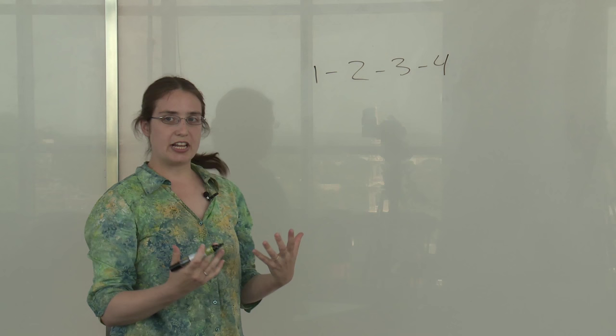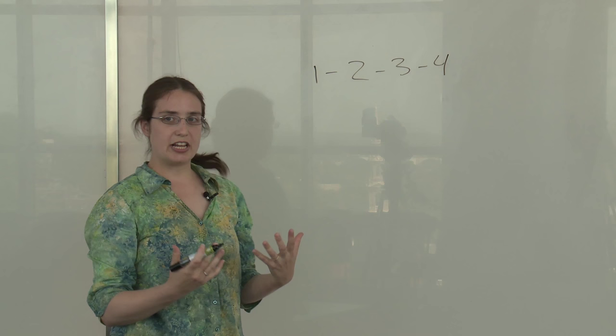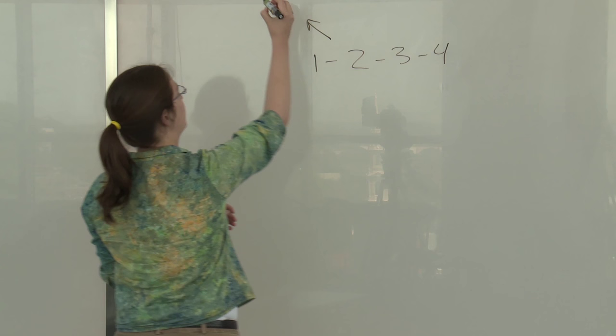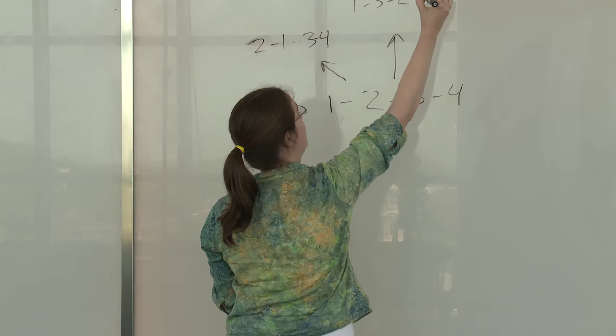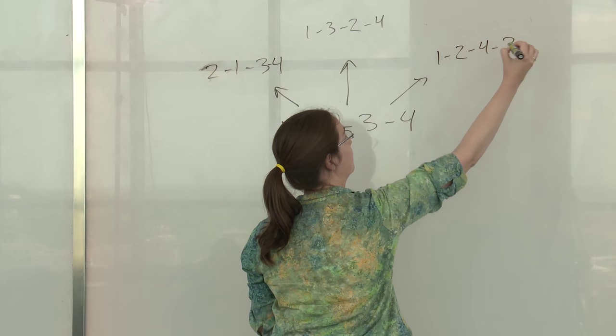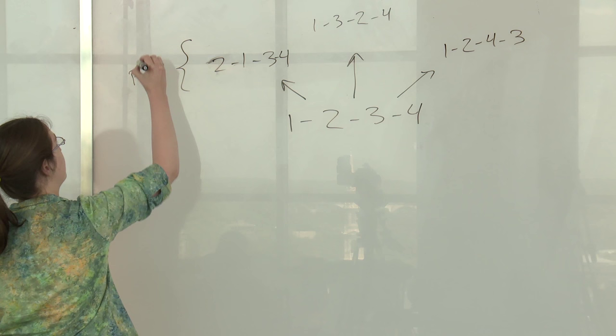So a plain change, we have three different options of what we can do. We can swap the first two bells in which case we end up with the order two one three four. We can swap the middle two bells and we get the order one three two four, or we could swap the last two bells and we get the order one two four three. So each of these is a plain change starting from that one two three four order.